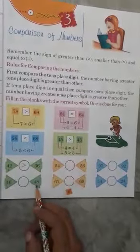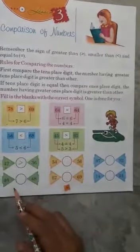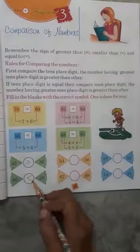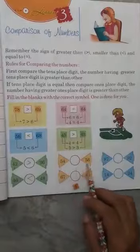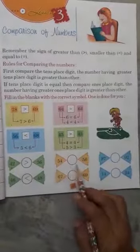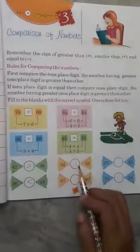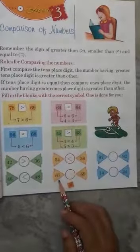46, 48 - in this, 4, 4 is equal. Between 6 and 8, the number 8 is greater, so you will put the sign in this way. 54, 56 - first numbers 5, 5 are equal. Between 4 and 6, the number 6 is bigger.